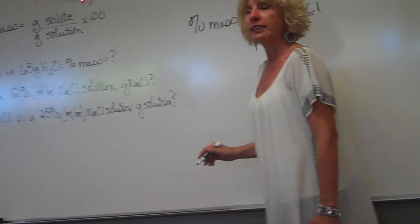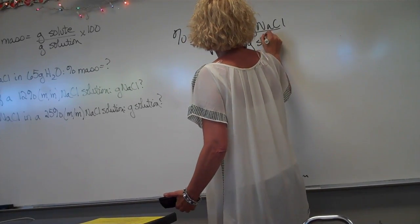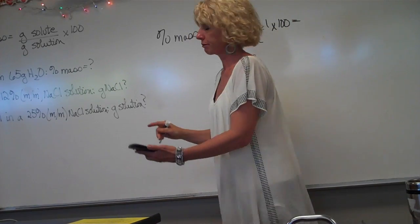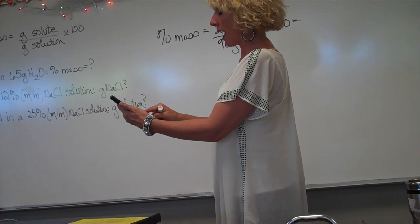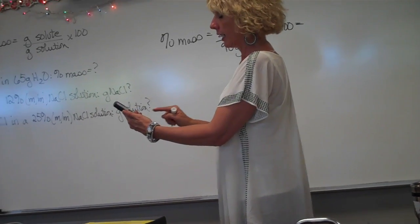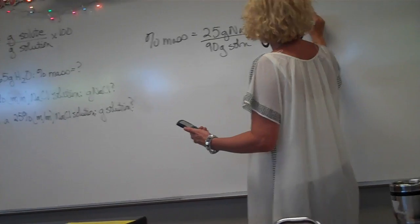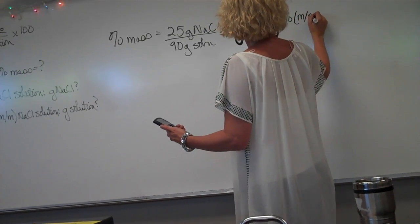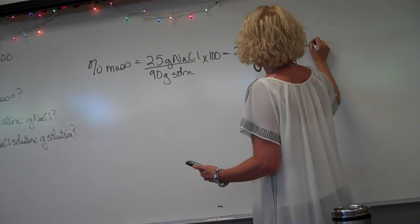25 and 65 is 90 grams of solution, and then we're going to multiply by 100. Taking out our calculators: 25 divided by 90 times 100 is equal to 27.78% — grams over grams — salt solution.